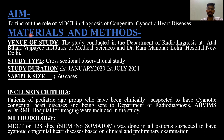Aim: to find out the role of MDCT in diagnosis of congenital cyanotic heart disease. Materials and methods. The study was conducted in our department. Study type is cross-sectional observational study. Study duration is 1st January 2020 to 1st July 2021. Sample size is 60 cases. Inclusion criteria: patients of pediatric age group clinically suspected to have cyanotic congenital heart disease were sent to our department and included in the study. Methodology: MDCT on a 128-slice Siemens Somatom was done in all patients suspected to have cyanotic congenital heart disease based on clinical and preliminary examinations.